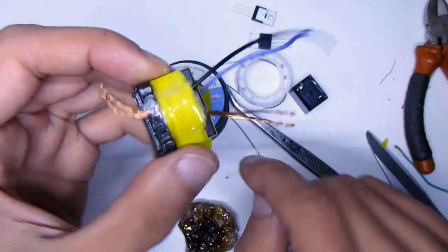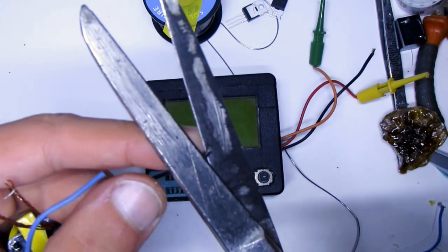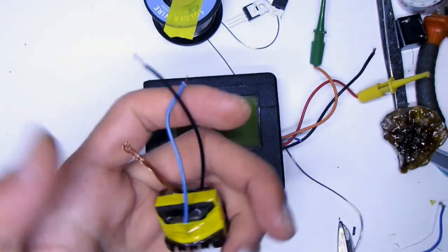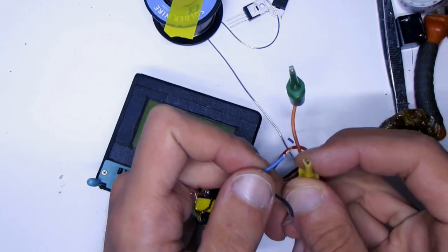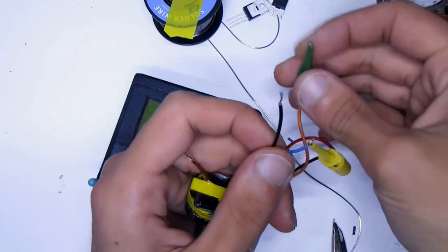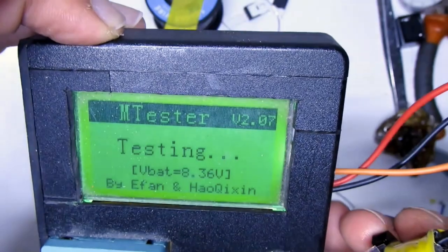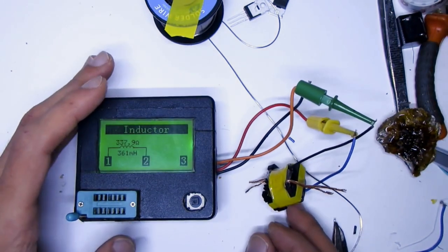Here is the finished transformer. Now it is necessary to ensure the integrity of the secondary winding. Remove the insulation and check with a multimeter or other device. In my case, it is a transistor tester bought online. See link under the video. Check winding resistance. It is equal to 338 ohms. It is okay. Inductance is not important, but the device also shows its value.